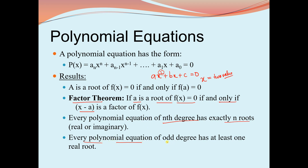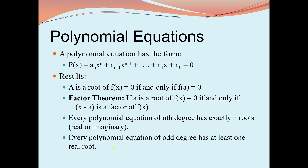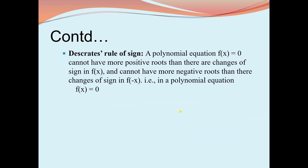Every polynomial equation of odd degree has at least one real root. For example, ax³ + bx² + cx + d = 0 has degree 3 — an odd degree — so it will compulsorily have at least one real root.